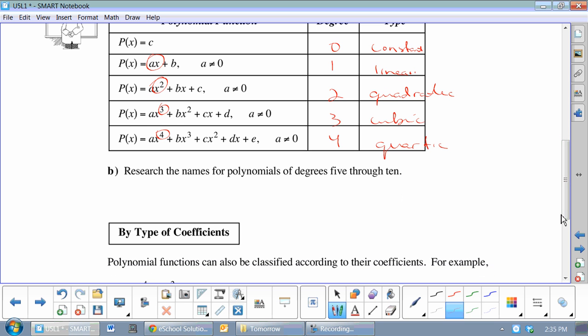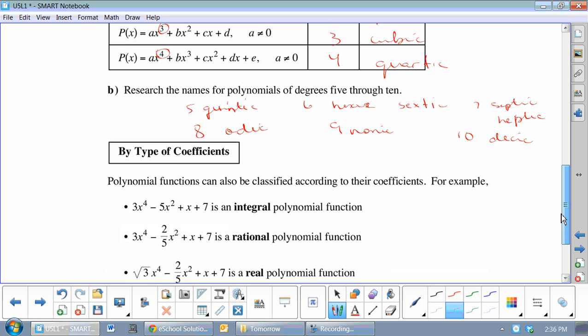Numbers 5 through 10. 5 is quintic. Sorry for my spelling there. 6 is hectic or sextic. 7 is septic. A lot of bad words here. And heptic. 8 is octic. 9 is nonic. 10 is decic. Etc. Now, we can also classify by their coefficients.